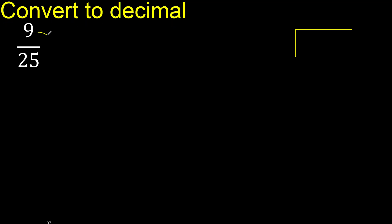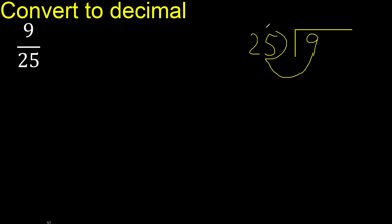9 divided by 25. 9 is less than 25, therefore complete with 0. Always complete with 0 here. Write 0 point.